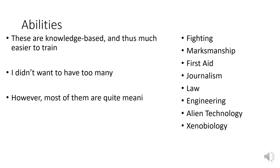Abilities are knowledge-based, which is why they're easier to train. I have eight abilities in the game: Fighting, Marksmanship, First Aid, Journalism, Law, Engineering, Alien Technology, and Xenobiology. I didn't want too many, because if you have too many it's difficult to make all of them meaningful. Fighting and Marksmanship are compared against Agility, so training them makes it easier to hit other people. First Aid lets you heal yourself or others. Journalism and Law are mostly used in Genesis for side missions and environmental interactions. Engineering and Alien Technology are important for crafting or operating machinery.